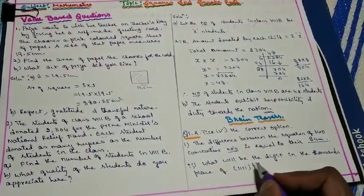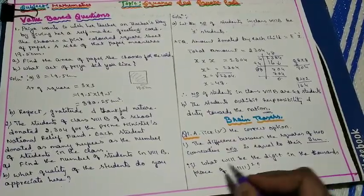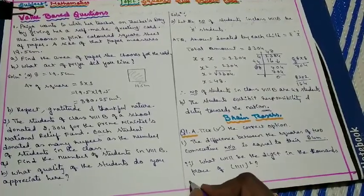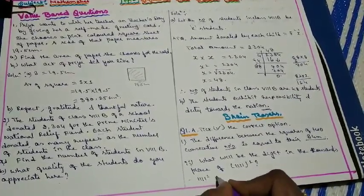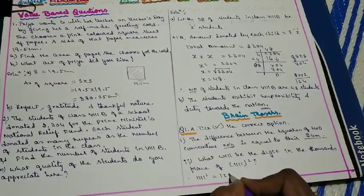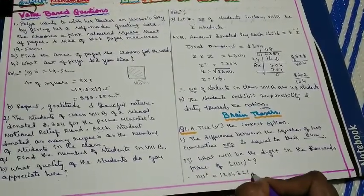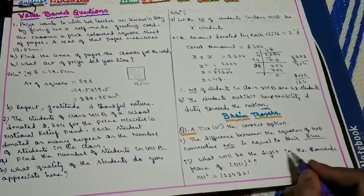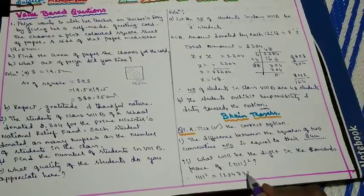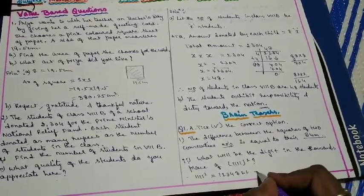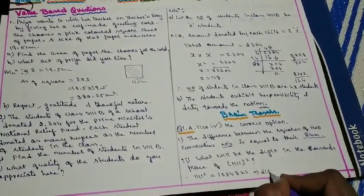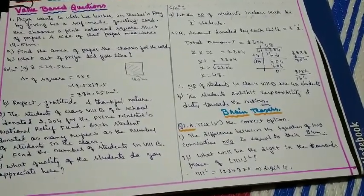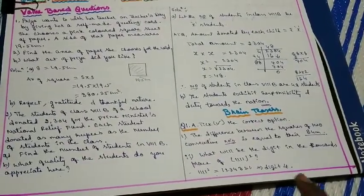Question 2: What will be the digit in the thousands place of 1111²? We know 1111² = 1,234,321. The thousands place digit is 4, so option B is the answer.